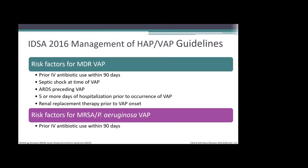Risk factors for multi-drug-resistant VAP include prior IV antibiotic use within 90 days, septic shock or ARDS at the time of or preceding VAP, five or more days of hospitalization prior to VAP, or renal replacement therapy prior to VAP onset. Additionally, prior IV antibiotic use within 90 days is a specific risk factor for both MRSA and Pseudomonas VAP.